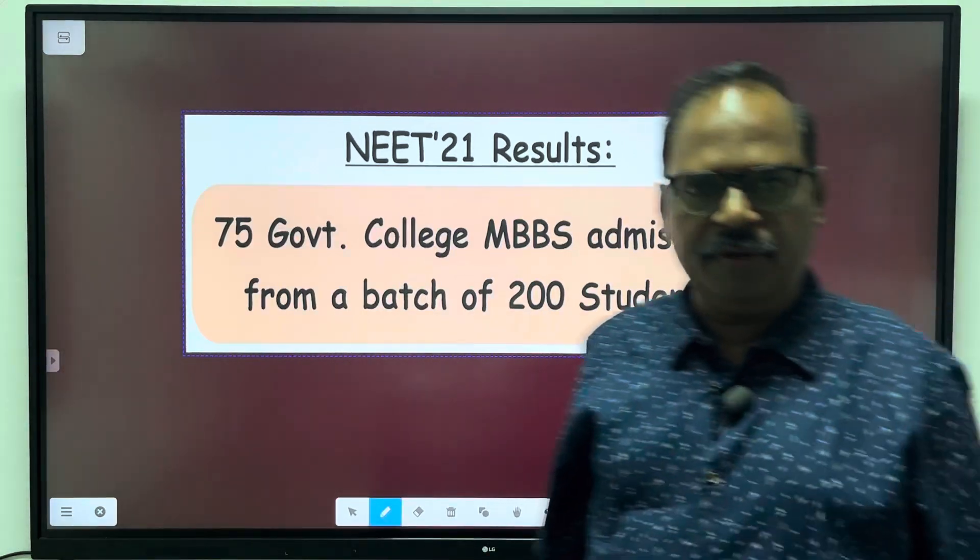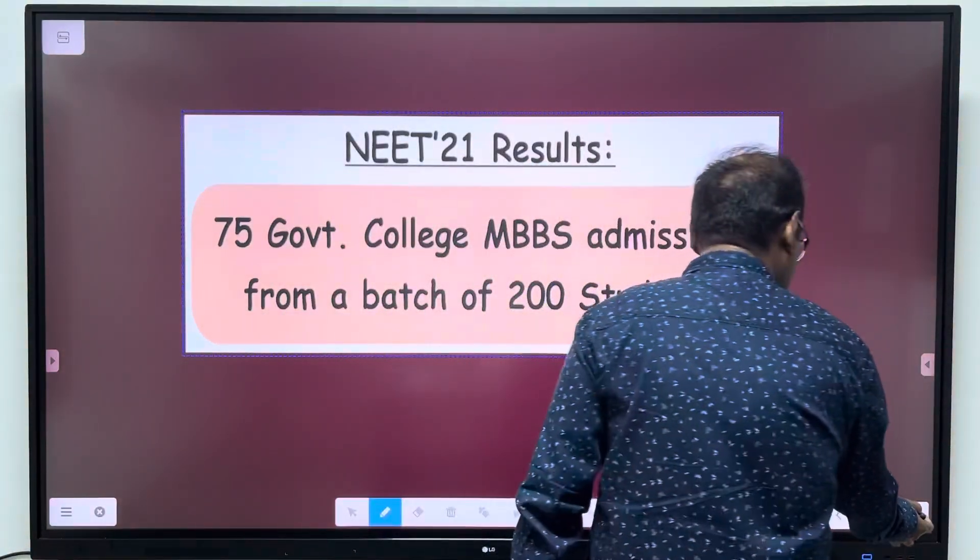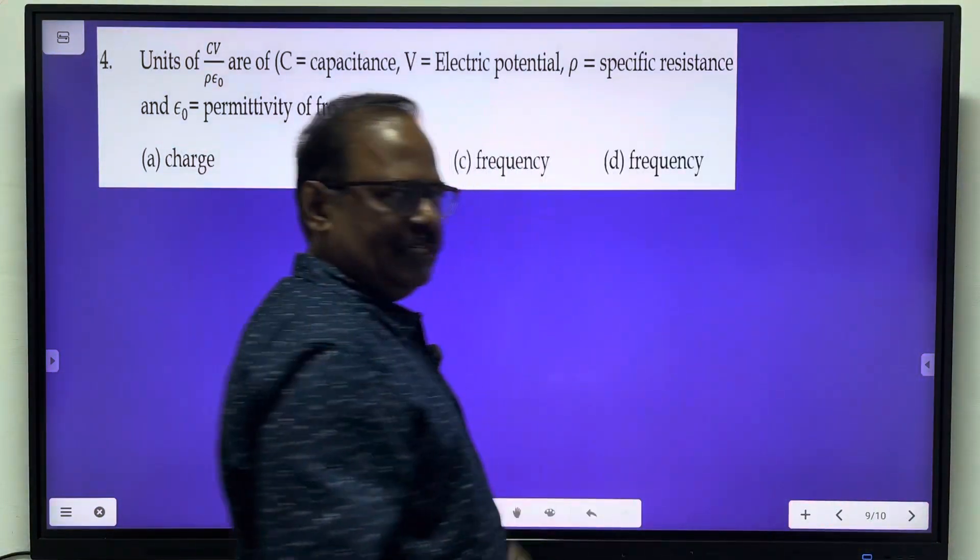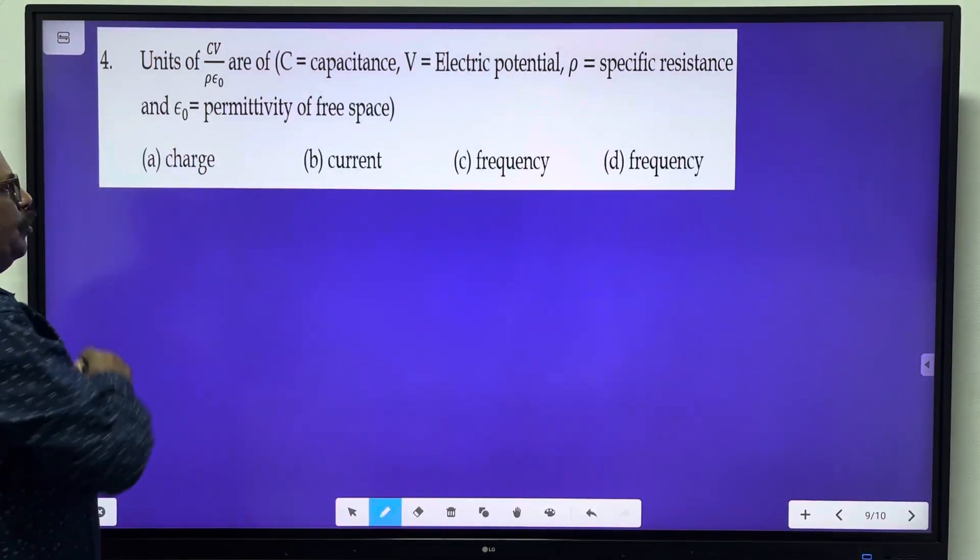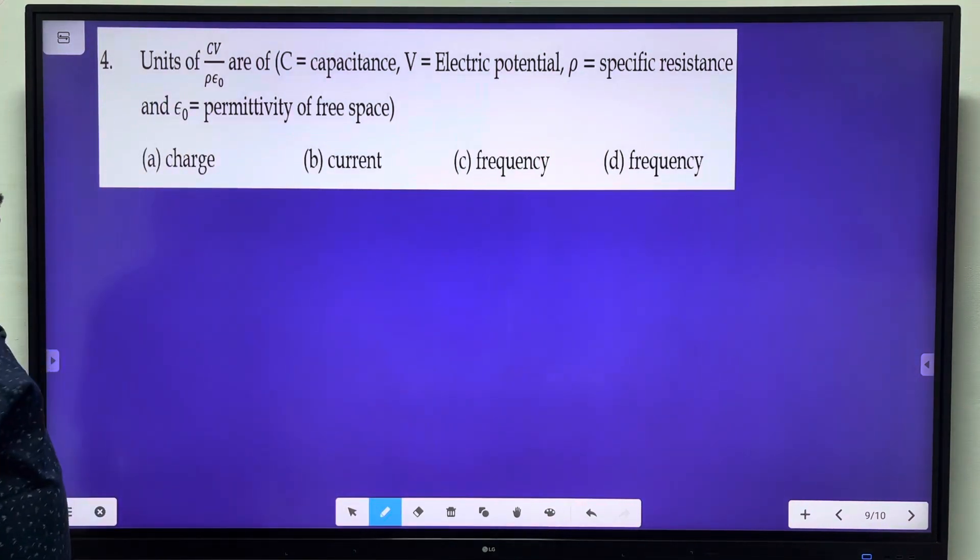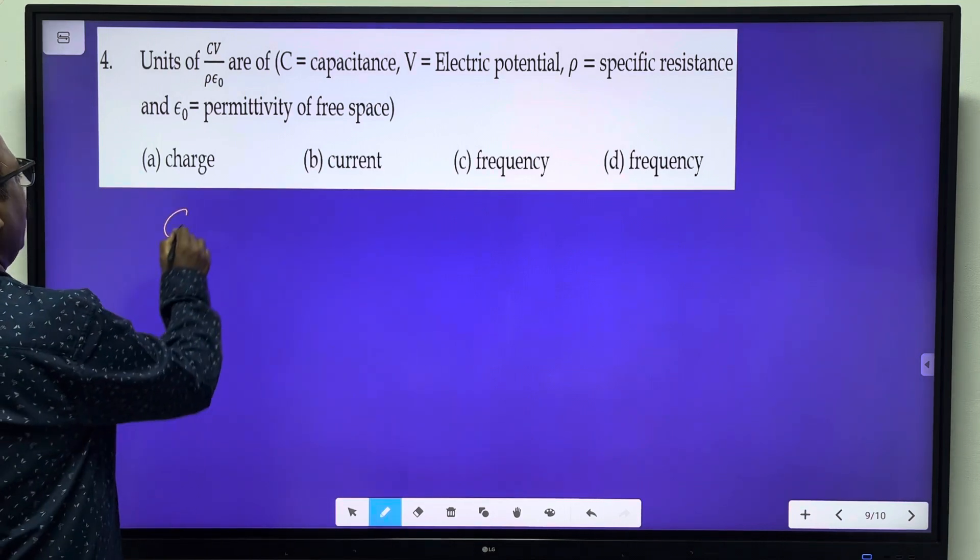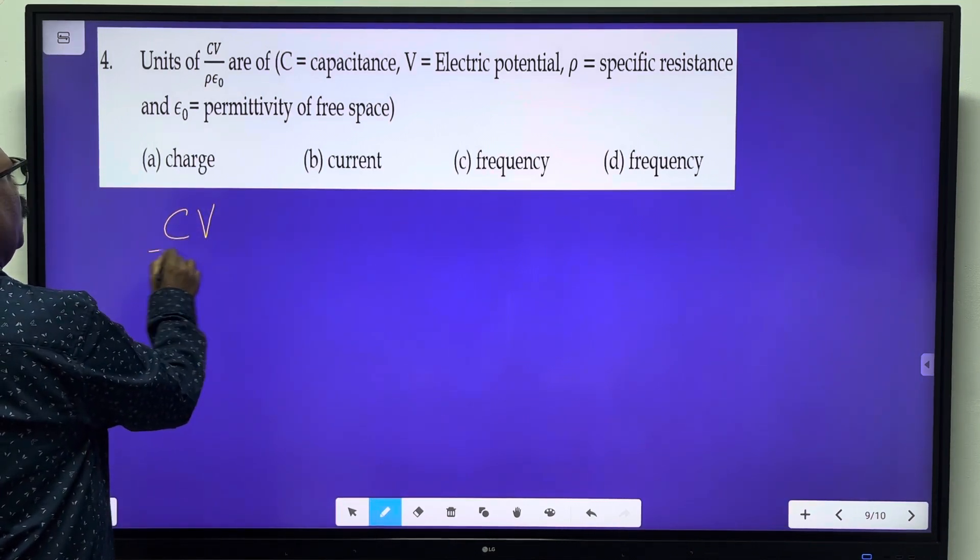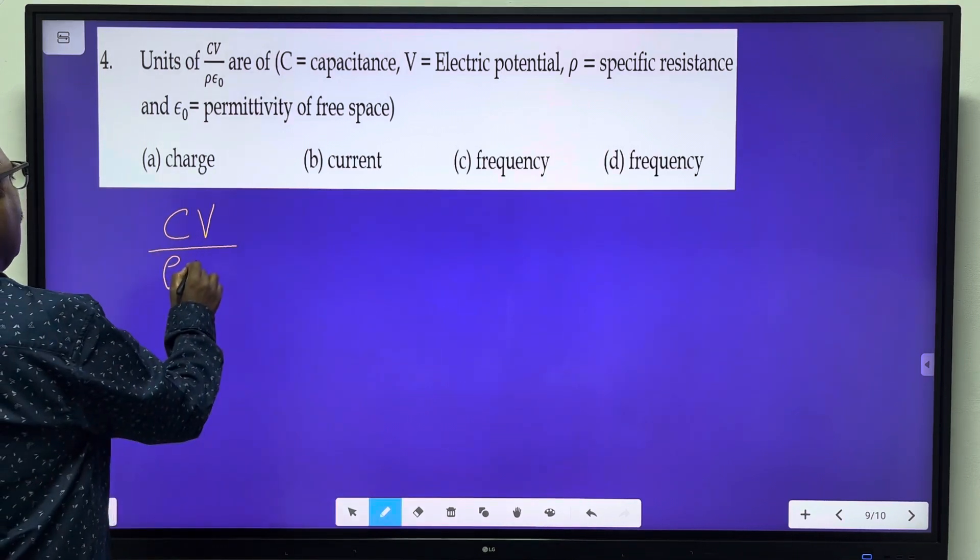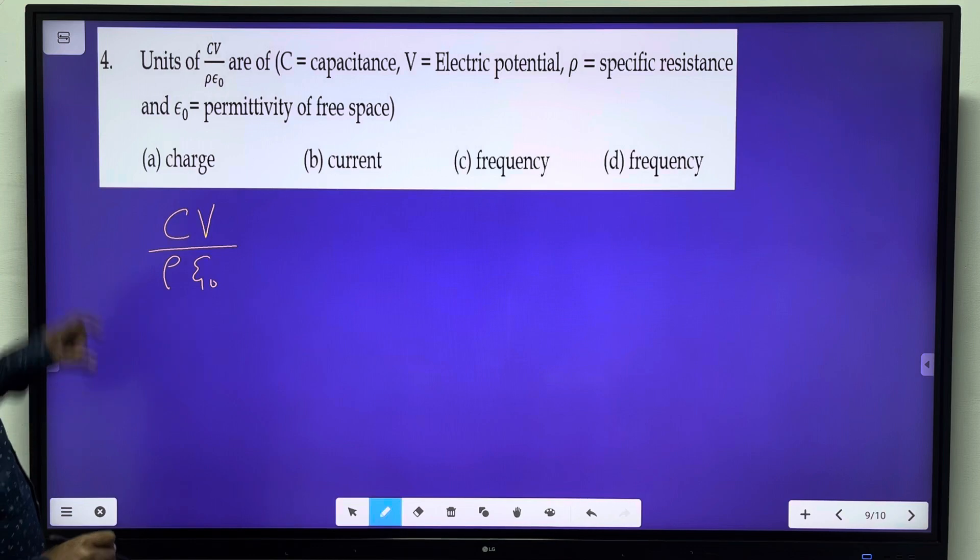Good evening students. Next question: Units of CV/(ρε₀), where C is capacitance, V is electric potential, ρ is specific resistance, and ε₀ is permittivity of free space.